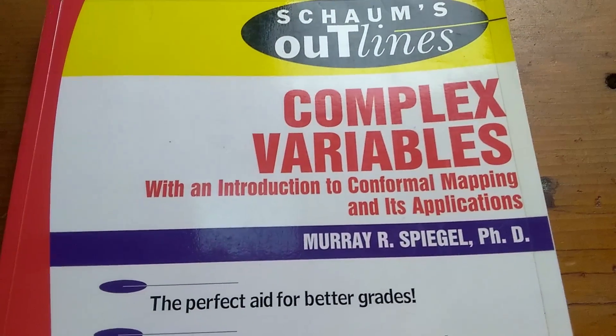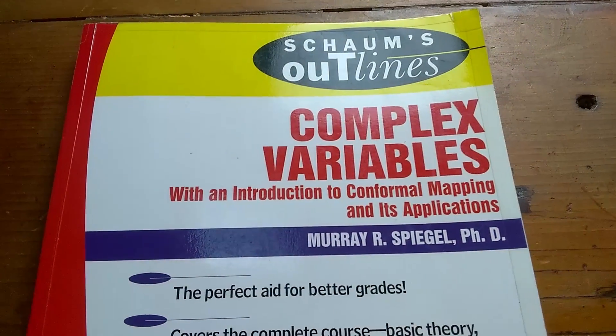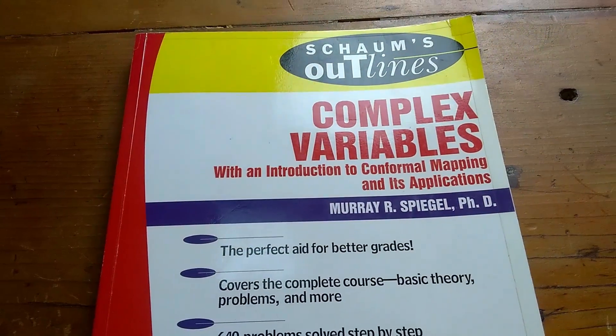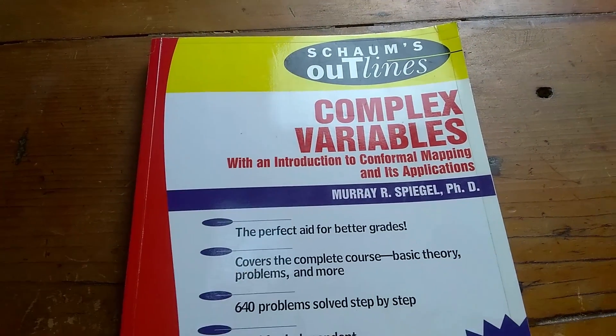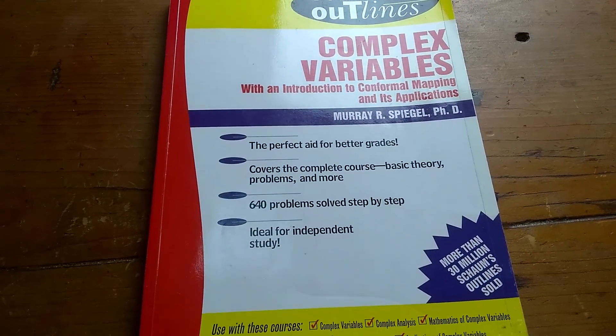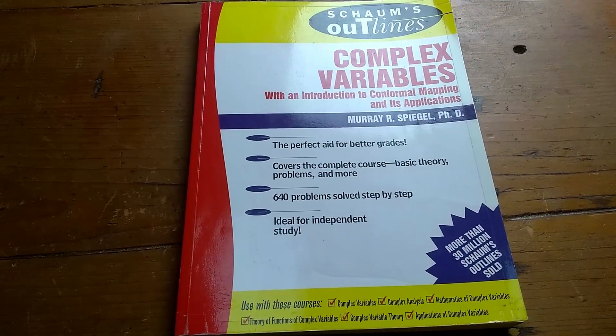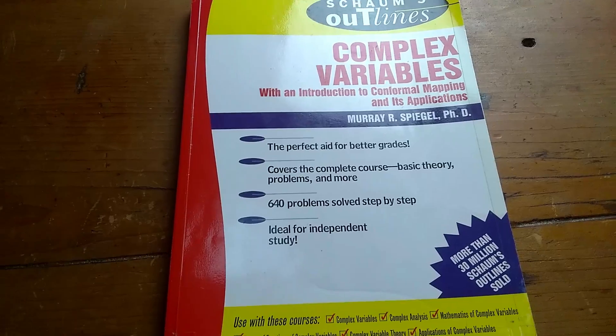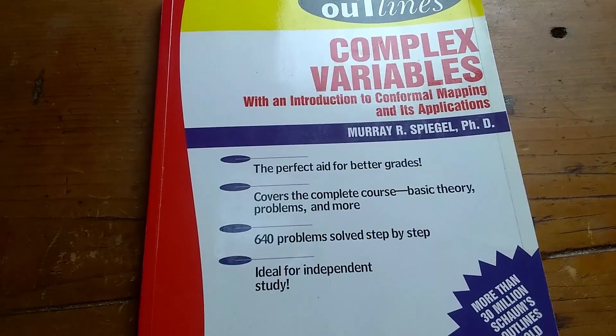The Schaum's outline for complex variables is awesome. If you are taking a complex variables class or a complex analysis class, either at the graduate or undergraduate level, you should definitely have this book. This book has almost everything, if not more than what's in your actual book.